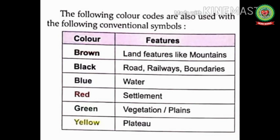Some important conventional colors are used with conventional symbols. Brown color depicts land features like mountains. Black color is used to show roads, railways, and boundaries. Blue color depicts water bodies like sea, ocean, and rivers. Red color is used to show settlements — both permanent and temporary. Green color depicts vegetation and plains.